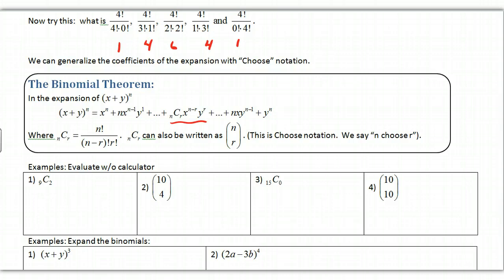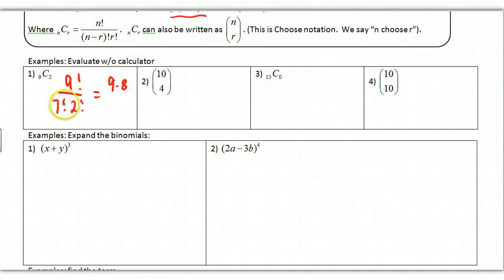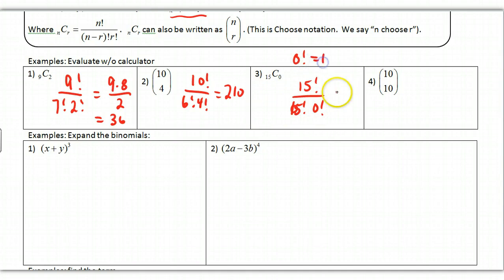For example, 9 choose 2: write 9! over 7!·2!. The 7! cancels, leaving 9×8 over 2, which is 72/2 = 36. For 10 choose 4, that's 10! over 6!·4!, which simplifies to 210. For 15 choose 0, we have 15! over 15!·0!. Since 0! = 1, everything cancels and we get 1. Similarly, n choose n always gives 1.